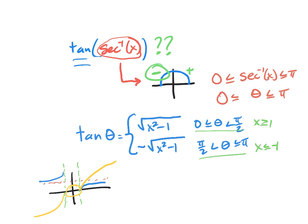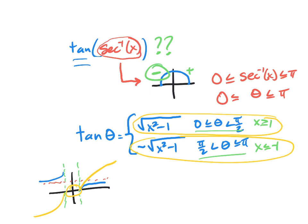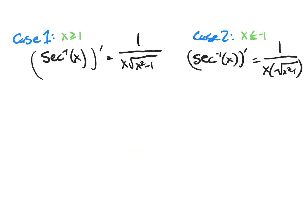So this is the key: there are two cases. Case 1 is when x is greater than or equal to 1 — we use the positive square root. Case 2 is when x is less than or equal to negative 1 — we use the negative square root. I'm going to go back to the derivative formula and write it that way. When x is greater than or equal to 1, the derivative is just 1 over x times square root of x-squared minus 1, exactly the formula we got from the triangle.